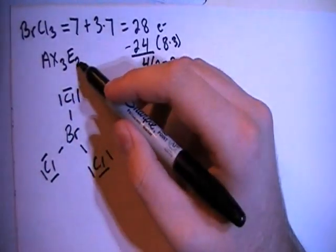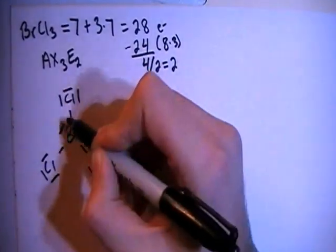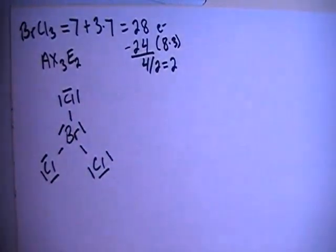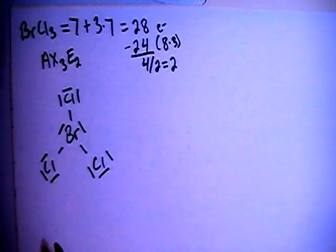Okay, and then we also have to add on these 2 non-binding pairs of electrons. So we can put one of those pairs here and one of those pairs here. And that should be our final structure.